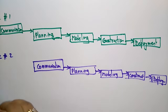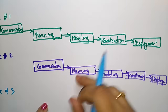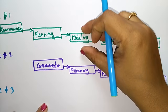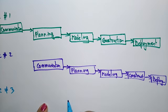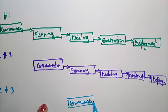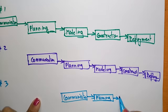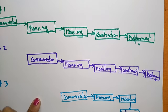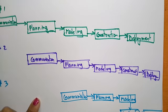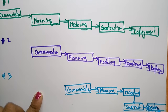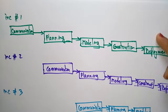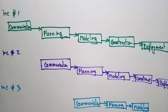In increment three: one team is in the modeling stage, another is in the planning stage, and the third team is starting with communication, then planning that module, then modeling, then construction, and finally deployment. This is how the incremental model works. Thank you.